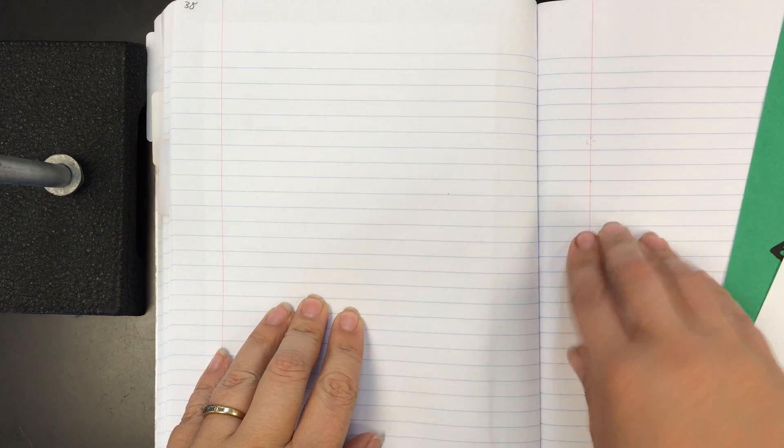Hi everyone, this is Ms. Tagovia and I'm going to show you how to make the leaf foldable for your notebook. So my notebook this year we're going to be doing it on page 38, which is the left side, because on the right side we're going to be putting some notes later.